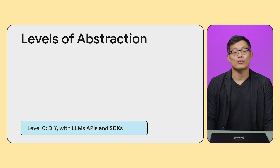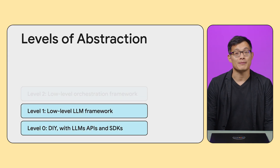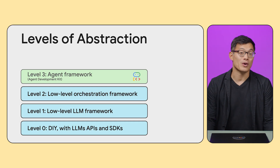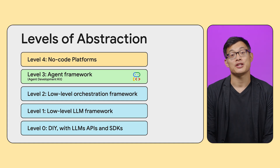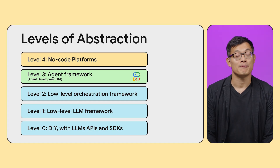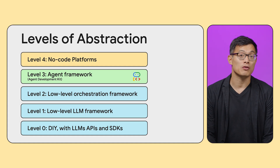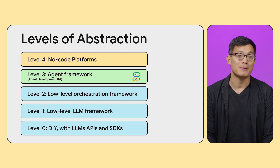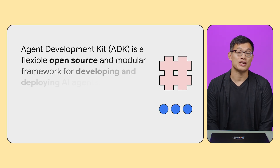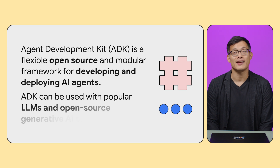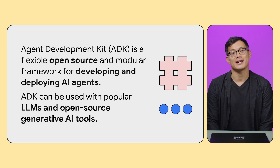Building AI agents from scratch, dealing directly with LLM APIs or SDKs can quickly become complex. You're managing state, memory, tool calls, control flow, and more — often reinventing the wheel for common patterns. That's precisely what the Agent Development Kit, or ADK, is designed to address.